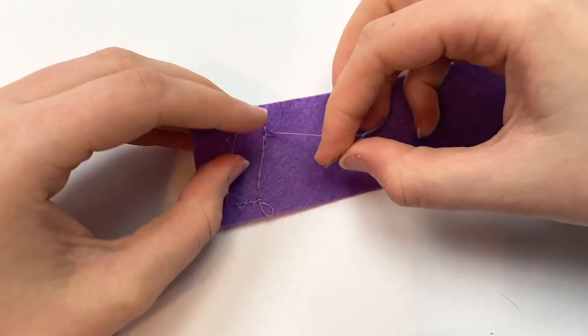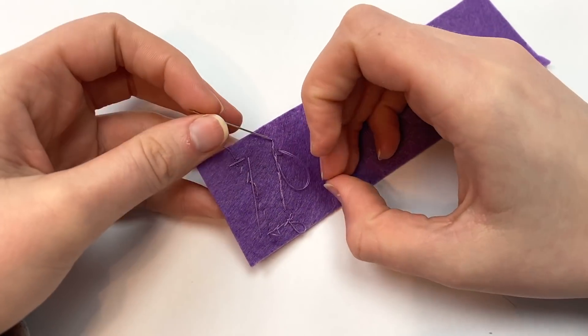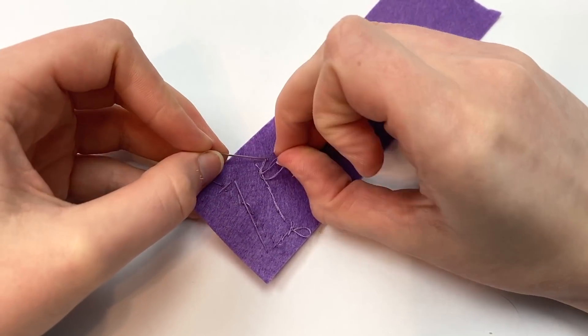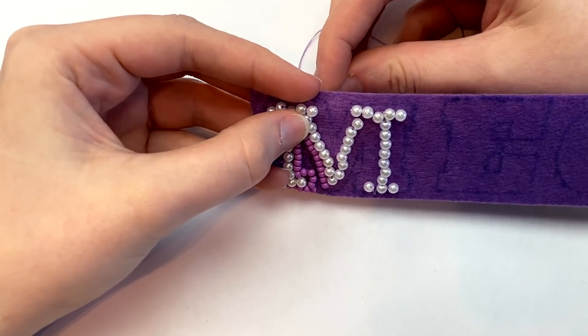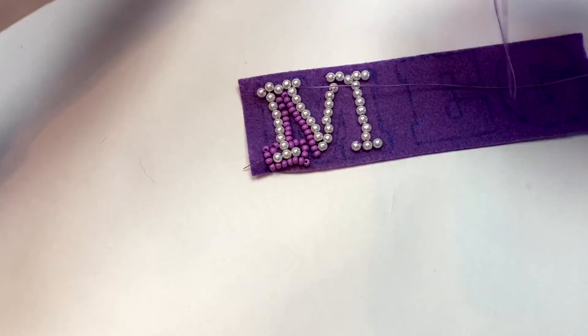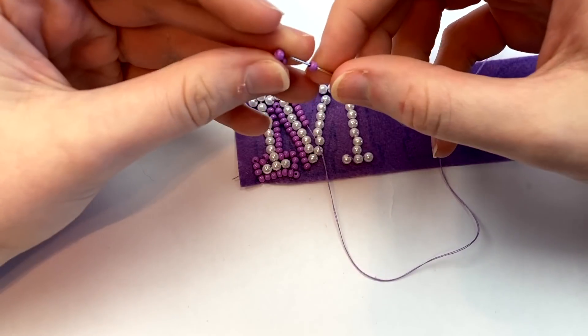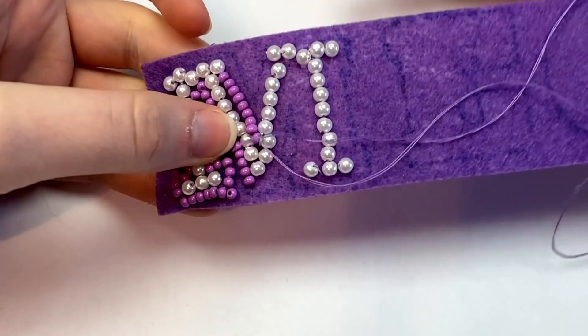When you start to run out of thread, bring your needle to the back and slide it underneath one of these stitches. This will create a little loop. Bring the needle back around through the loop to create a knot. Do this one or two more times and cut off the excess thread. The other method you can use to sew on the beads is to bring your needle up through the felt just like we did before, but this time you're going to string on a whole row of beads. When you get to the end of the row, bring your needle back down, and then we're going to make a small stitch in between each bead until we get back to the beginning.